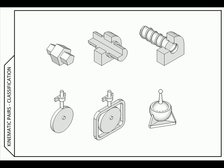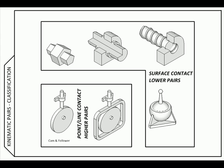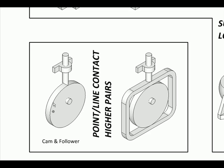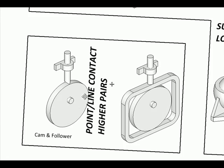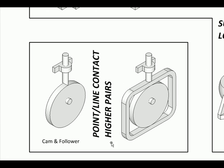Finally, the last classification is according to the contact between two bodies. Here the contact is made all over the surface—the prismatic surface, cylindrical surface, helical surface, or spherical surface. When we have surface contact, they are called lower pairs. When the contact is occurring only along a line or a point, such pairs are called higher pairs.